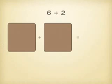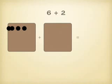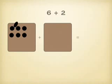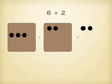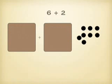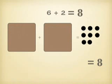So 6 plus 2 would be 1, 2, 3, 4, 5, 6 — and 1, 2. I'm going to add them together, merging them all together, and I get 8. So 6 plus 2 is 8.